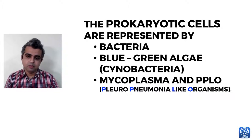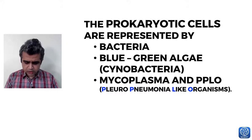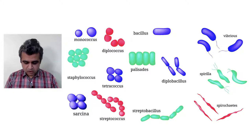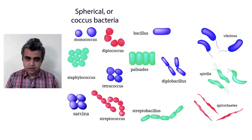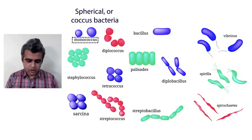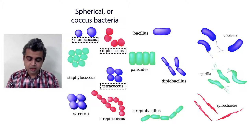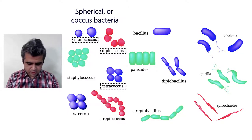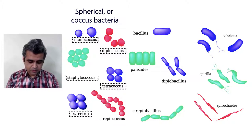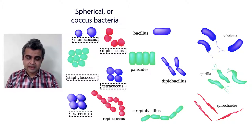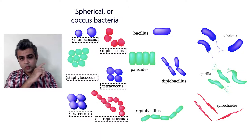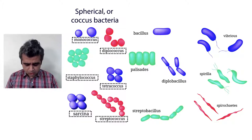Bacteria are available in a range of shapes. Spherical bacteria are called cocci. A single cell is monococcus; pairs are diplococcus; groups of four are tetracoccus; tightly bundled together they are sarcina; arranged like a bunch of grapes they are staphylococcus; and in a twisted chain they are streptococcus.